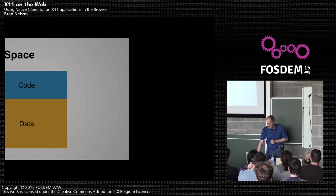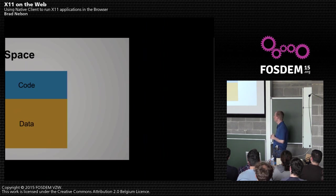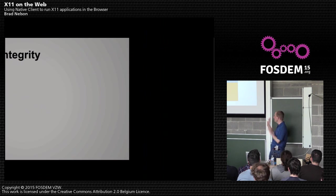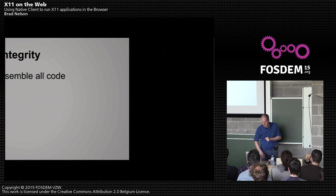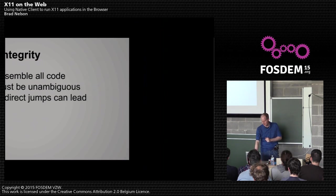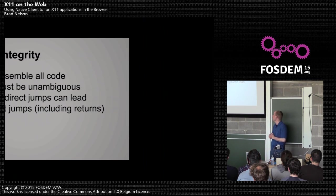NaCl has a particular address layout: 256 megabytes of potential space for code, and up to 4 gigabytes of data region, segregated from each other. Things in the code region are read-execute only; things in the data region are read-write, and the two do not mix. You want to make sure bad things don't happen ever, so you need to be able to disassemble all the code. The disassembly has to be unambiguous — you need to know where every direct jump goes, and more importantly, where all the indirect jumps go.